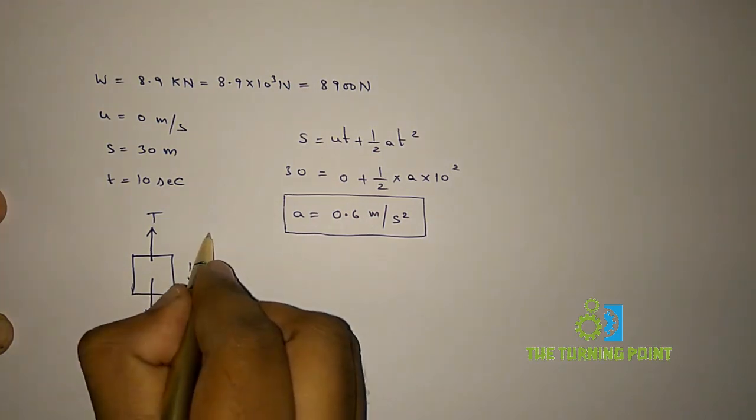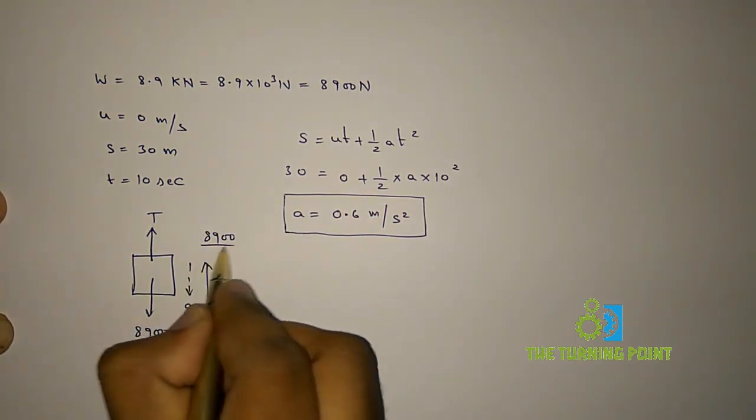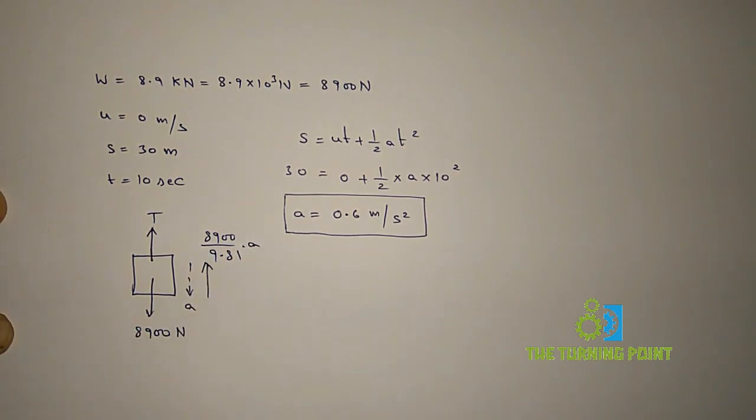Which is ma or W by g into a. So W is 8900 divided by g is 9.81 into a. So apply sigma Fy equal to 0.